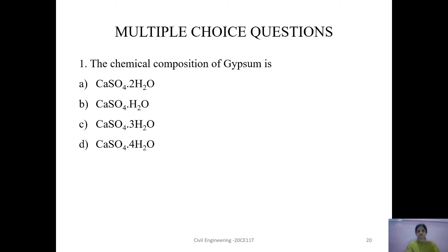Coming to the multiple choice questions. Question 1: The chemical composition of gypsum is — A) CaSO4·2H2O, B) CaSO4·H2O, C) CaSO4·3H2O, or D) CaSO4·4H2O. Gypsum is calcium sulphate dihydrate, which means CaSO4·2H2O. Therefore, the answer is A: CaSO4·2H2O.